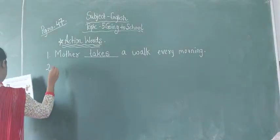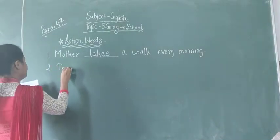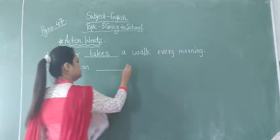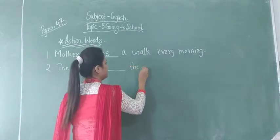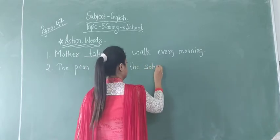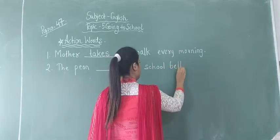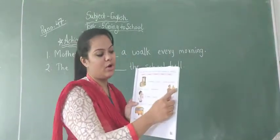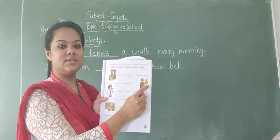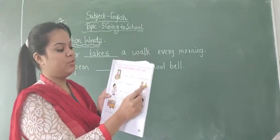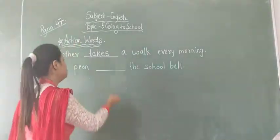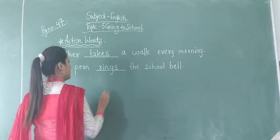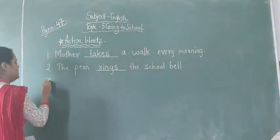After that, number two sentence: 'The peon blank the school bell.' You can see a peon in the picture — what is he doing? He is ringing the school bell. So the peon rings the school bell.